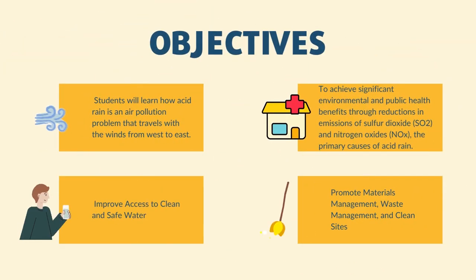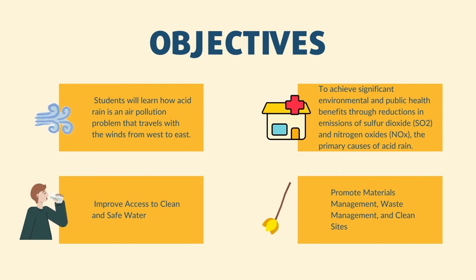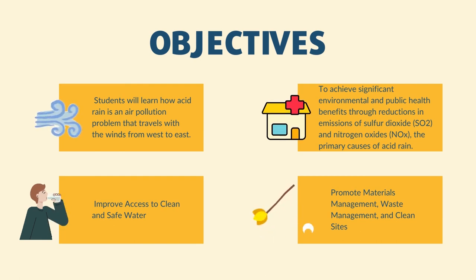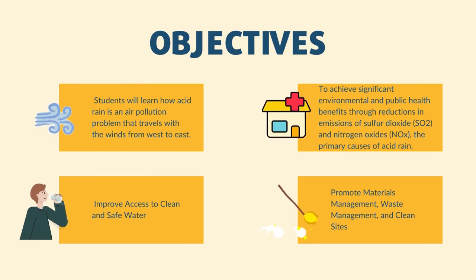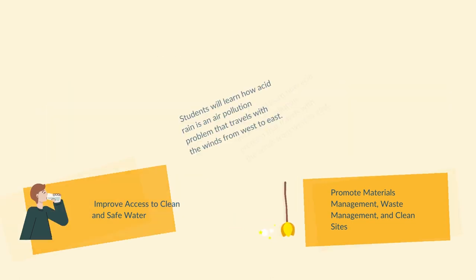By our presentation, students will learn how acid rain is an air pollution problem that travels with the wind from west to east, to achieve significant environmental and public health benefits, improve access to clean and safe water, and to promote material management, waste management and clean sites.